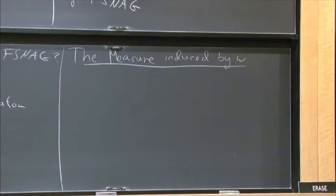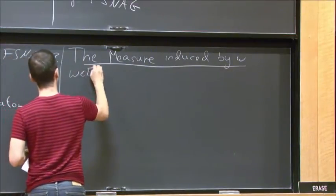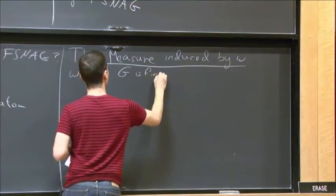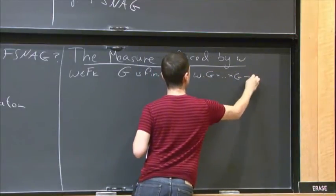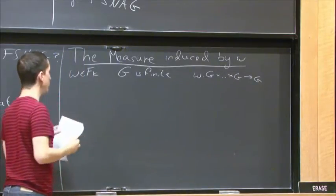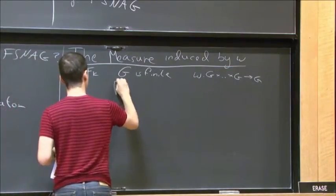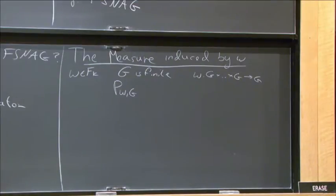Now G will be finite. But almost everything I will say, you can ask for compact groups as well. In this talk, I will only need finite groups. We again have a word in the free group on k generators, and now we assume G is finite. W is again the word map from k copies of G to G. Now W induces a distribution on G, or a measure, simply by asking for each element how many times we obtain it. We denote it by P_{W,G} - the probability distribution induced by W and G. It's defined by: we take the fiber of G at g, this is the size of the fiber divided by G to the k.